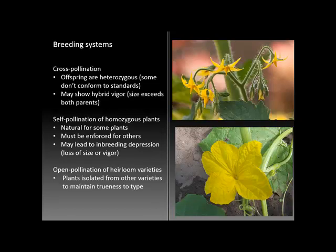Some of the major breeding systems that are in use involve pollination. Pollination is the mixing and recombination of genes and genetic information in the process of going from a flower to a seed. There are both species and situations in which cross-pollination is desired, and there are situations in which we want to maintain the exact characteristics of the parent plants, so self-pollination is important and enforced.